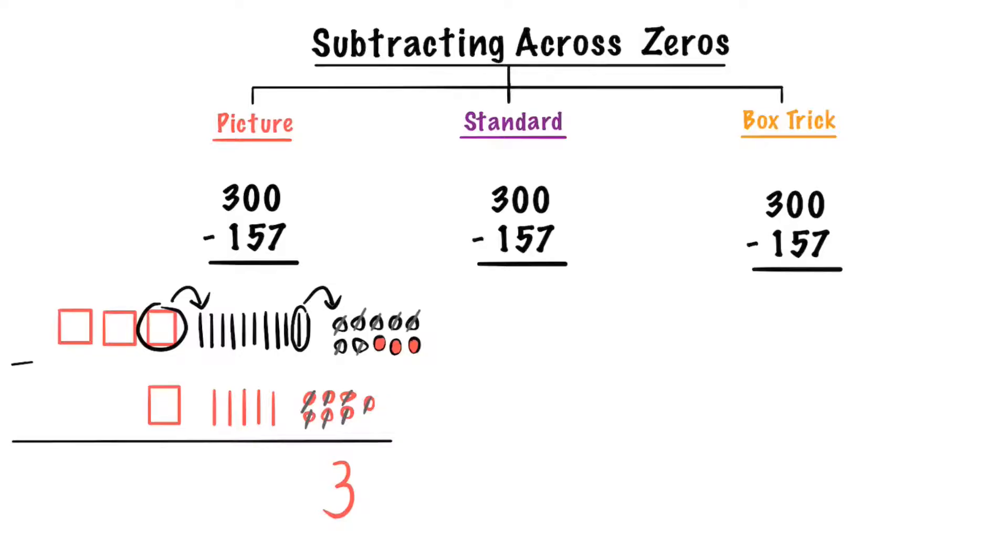Let's subtract the tens by crossing off. We have 1, 1, 2, 2, 3, 3, 4, 4, 5, 5. We have 1, 2, 3, 4 left.